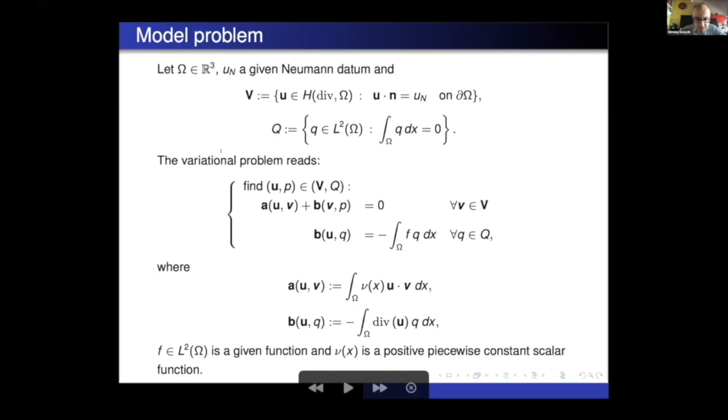If you change the boundary condition velocities, this condition should be dropped. Okay, A denotes the standard bilinear form with the integral of two velocities, and B, the bilinear form with the integral of a divergence of a velocity times the pressure. The coefficient nu will be scalar and positive and piecewise constant.